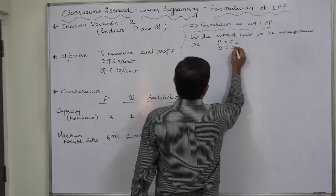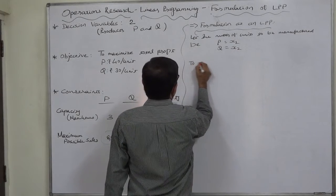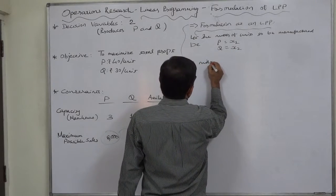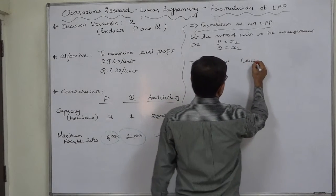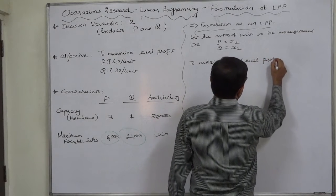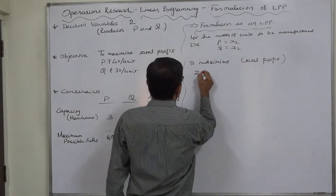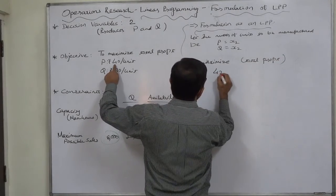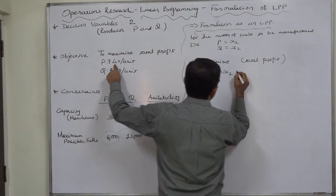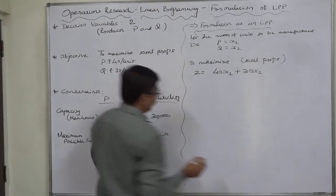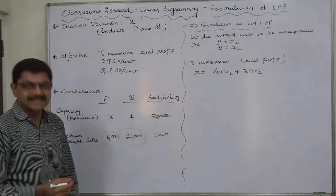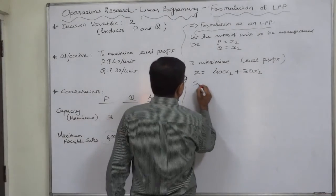That is, Z = 40X₁ + 30X₂. This is to be maximized, subject to the constraints.